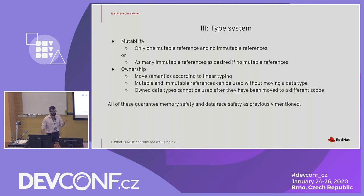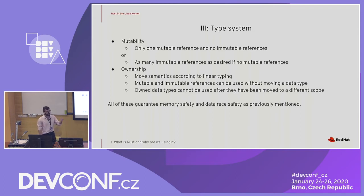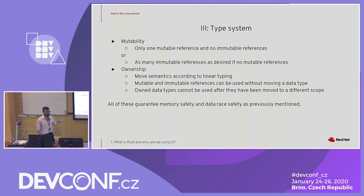For ownership, we use move semantics. Mutable and immutable references can be passed into functions, but that does not constitute a move. Owned data types will be moved when passed into a function and cannot be used in the original scope after they have been moved. These guarantee memory safety and data race safety, as we talked about before.